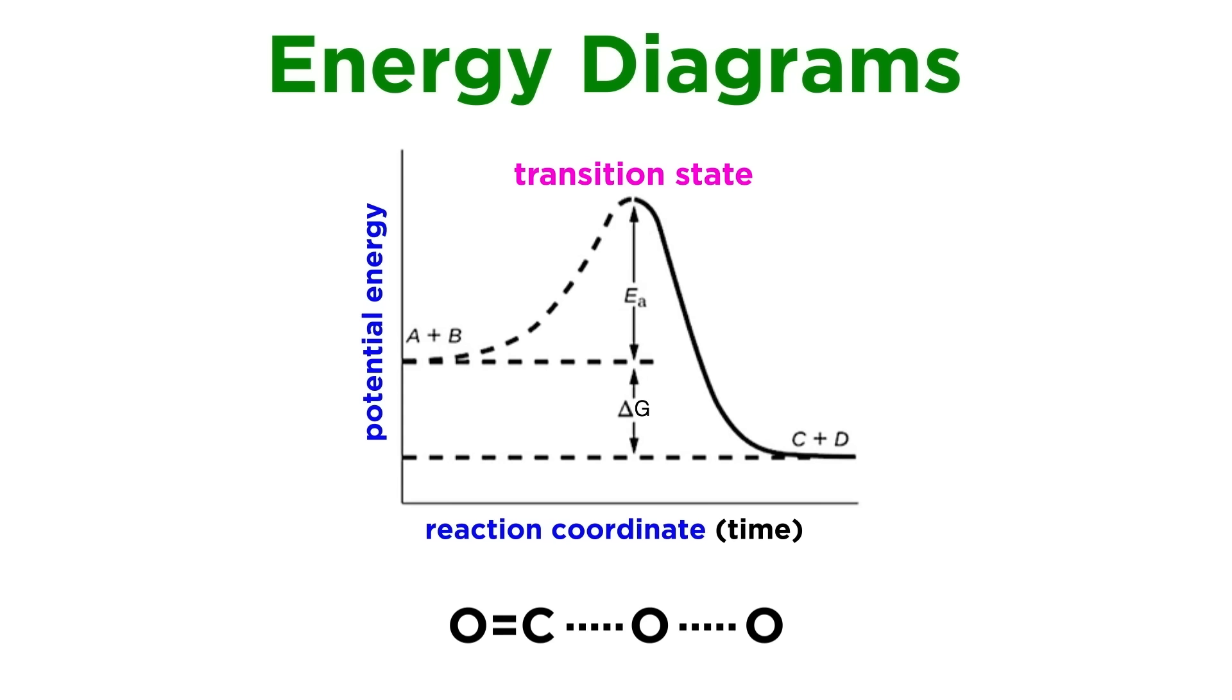Again, the transition state is the configuration that must be reached for the reaction to proceed, and this is something that exists for only a moment. It is not something that can be isolated. It is an activated complex, whereby spontaneous movement toward the products is then inevitable.